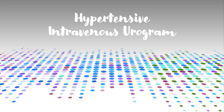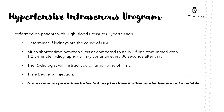A hypertensive intravenous urogram is performed on patients with hypertension to determine if the kidneys are the cause of the high blood pressure. The setup is the same as an IVU; however, the timing of films changes significantly — films are taken at 1, 2, and 3 minutes, and may continue every 30 seconds after that. The time frame begins at injection. The radiologist will instruct you on the timing. This is not a common procedure today but may be done if other modalities are unavailable.